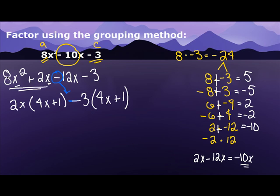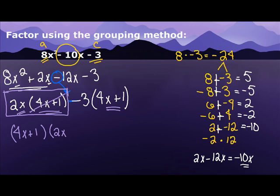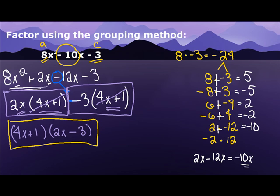So now when I look at these, I notice that I have a 4x plus 1 and a 4x plus 1. So I'm going to take that out, 4x plus 1. Now if I look at my first part, if I take out 4x plus 1, I'm left with 2x. When I look at my second part, when I take out 4x plus 1, I'm left with a negative 3. And this, right here, is your answer. That would be 8x squared minus 10x minus 3 factored.